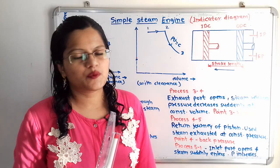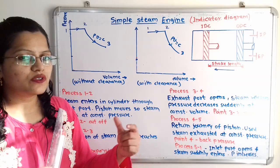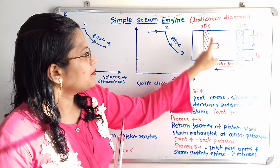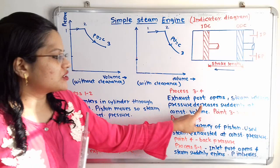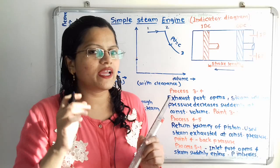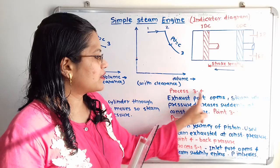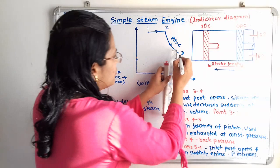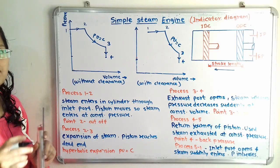During process 3 to 4, the exhaust port opens and steam releases. When the piston is at the inner dead center, the exhaust port opens and pressure decreases suddenly at constant volume. Point 3 is known as the release point. We show this as a vertical drop in pressure at constant volume, marking point 4 on both diagrams.